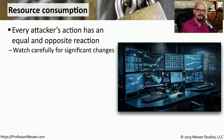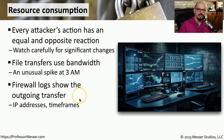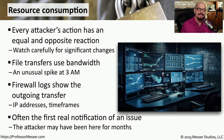When an attacker gets inside your network and gains access to your systems, there is always something they are doing that should allow you to track their progress. This is called resource consumption. For example, the attacker may be transferring files from one system to another, or transferring data out of your network onto their servers. This would certainly show a spike in traffic, and if you notice your network is suddenly busier than normal at 3 in the morning, that could be an indicator of compromise. Your firewall logs would show a transfer of information with IP addresses and timeframes. There have been breaches where the only notification of something unusual was one small file transfer occurring at a time when nothing else should be happening.